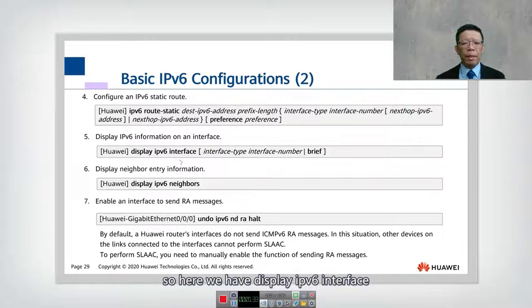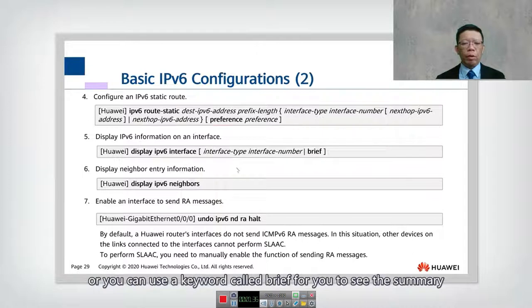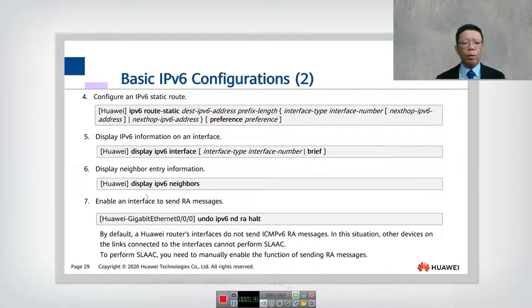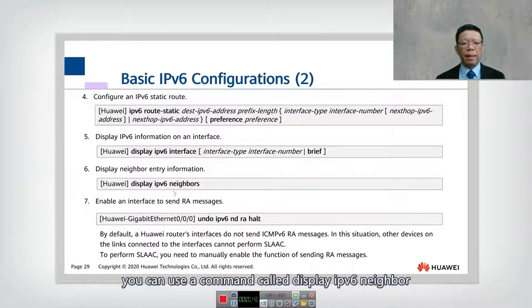For display commands, you can use 'display ipv6 interface' or add the keyword 'brief' to see a summary. If you want to see your neighbors, use the command 'display ipv6 neighbor'.